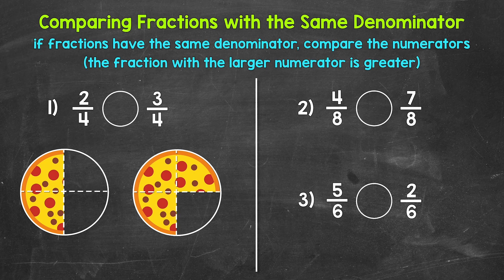Let's jump into number one, where we have two-fourths and three-fourths. Reading this comparison from left to right, we have two-fourths is greater than, less than, or equal to three-fourths. If fractions have the same denominator, all we have to do is compare the numerators, the top numbers. The fraction with the larger numerator is greater.